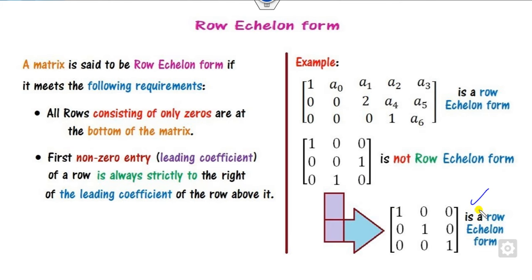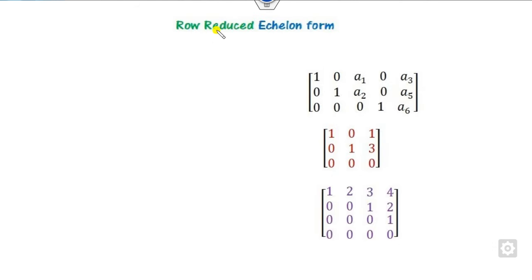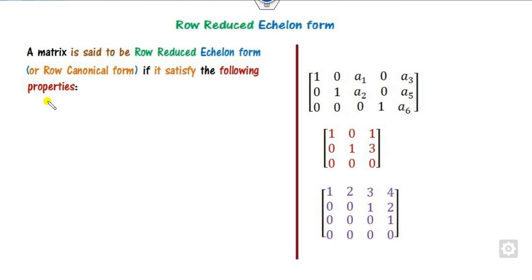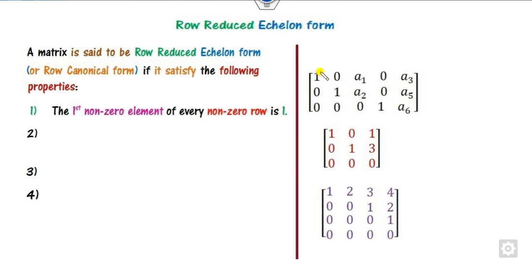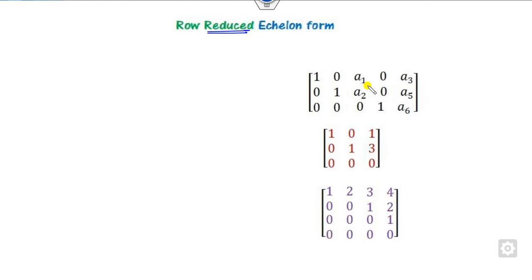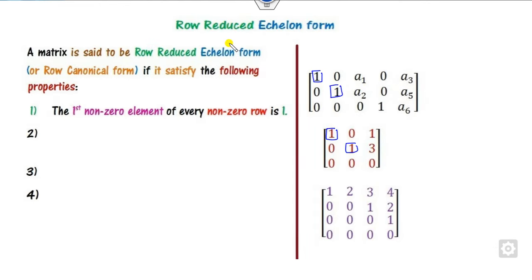Then you can see it becomes a row echelon form. Once the row echelon form is defined, we can define the row reduced echelon form. A matrix is in row reduced echelon form when it satisfies the two REF properties plus two additional ones. The first additional property is that the first non-zero element in each row must be 1. In row echelon form, the leading entry may or may not be 1, but with 'reduced,' it must be 1.